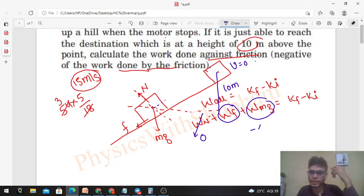...minus delta U, the change in gravitational potential energy. Final kinetic energy is zero minus initial kinetic energy, half of m into u squared. So what is work done by the friction? We can calculate the work done by friction as delta U minus half of m into u squared. And what is delta U?